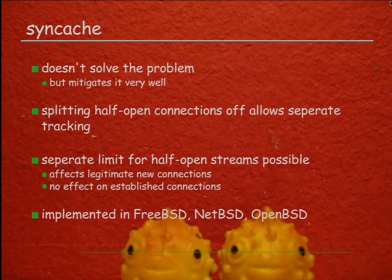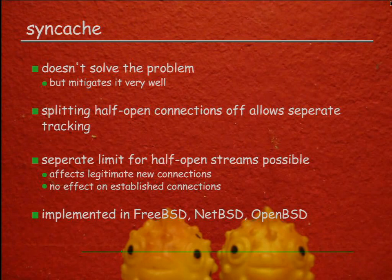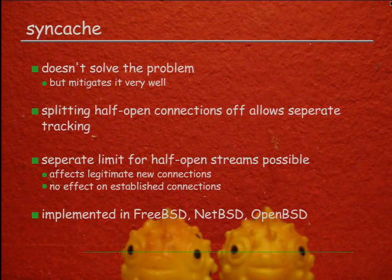Having split off half-open connections from fully established connections means we can have a separate limit for them, which helps a lot — in a SYN flood, established connections won't be affected. However, legitimate new connections might still get dropped in the flood. SYNcache is implemented in the FreeBSD, OpenBSD, and NetBSD stacks — for about 12-13 years by my memory.